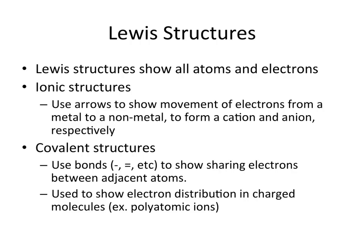We briefly covered ionic structures when talking about ionic bonds. They use arrows to show the movement of electrons from a metal to a non-metal. They form cations which have an attraction between one another.